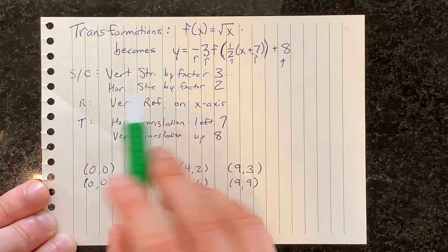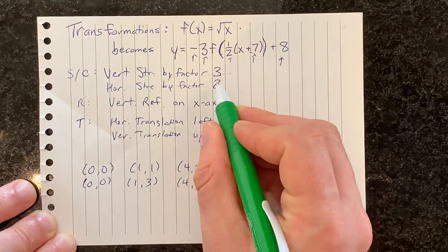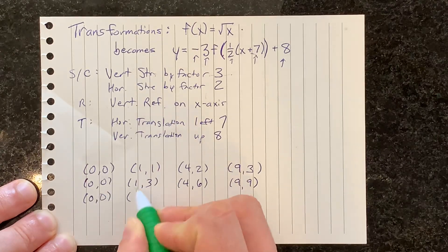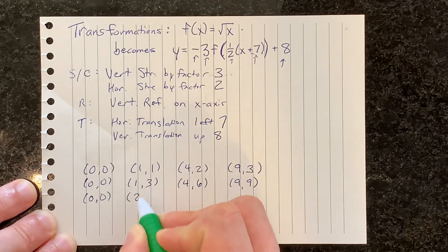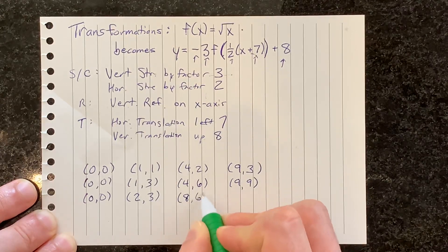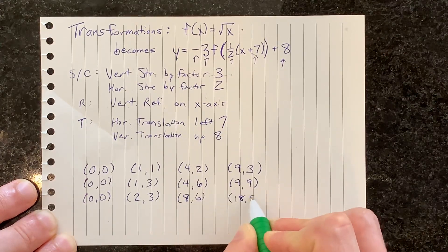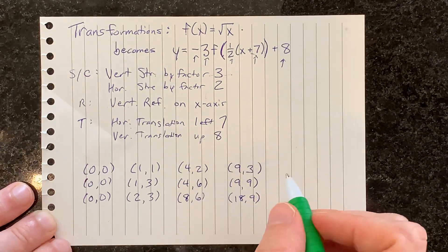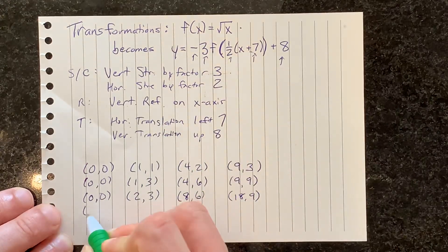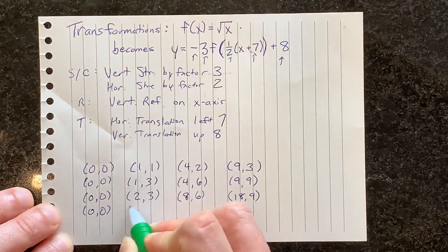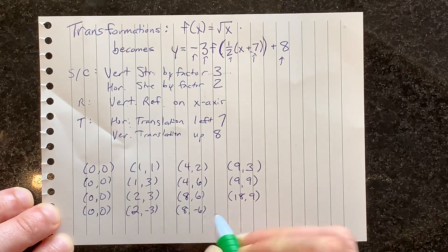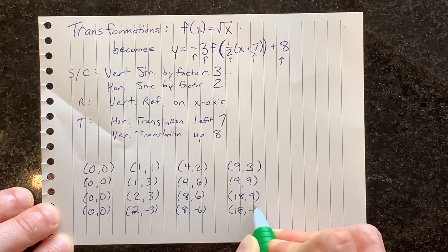The horizontal stretch will affect the x's — we multiply all the x's by two. Zero times two is zero, one times two is two, and we double each x-coordinate. A vertical reflection makes all the y-coordinates flip their signs. Zero isn't affected, but three becomes negative three, six becomes negative six, nine becomes negative nine.